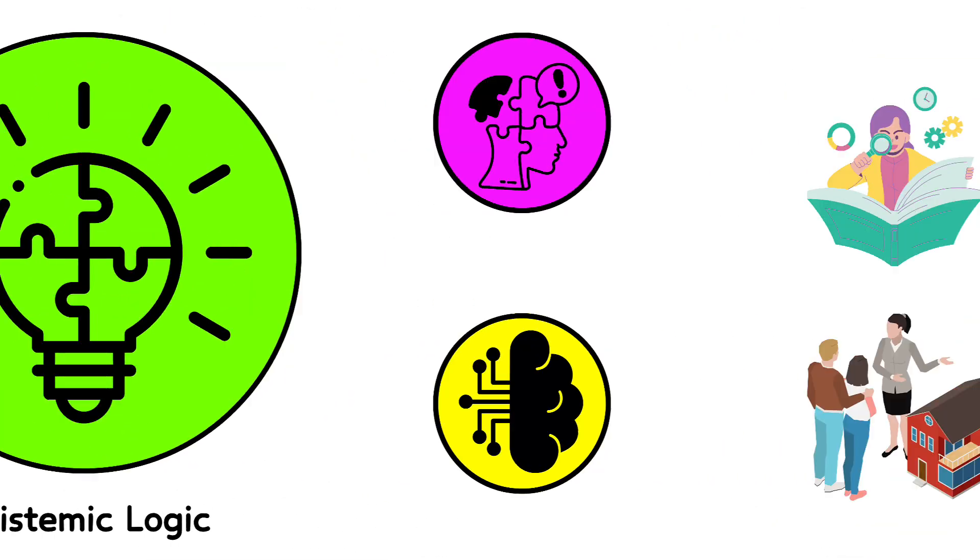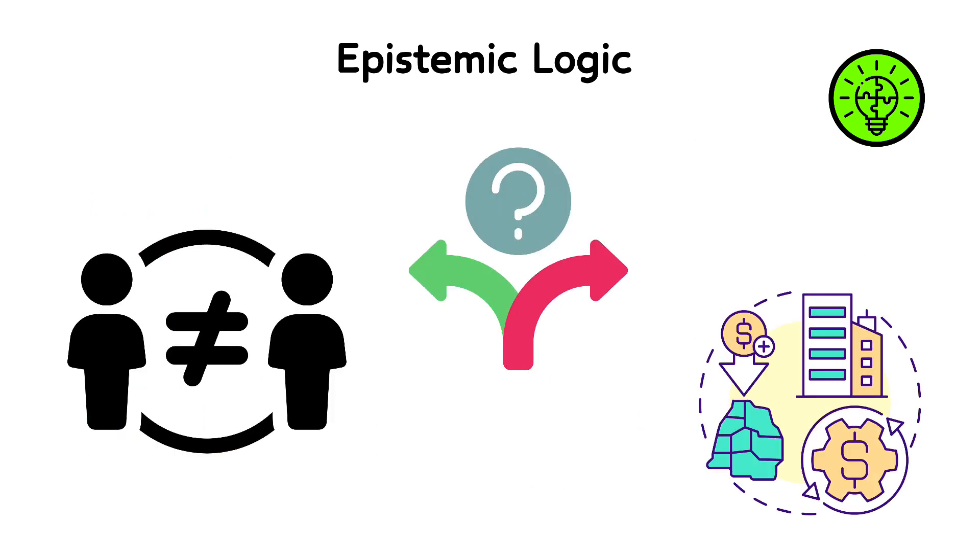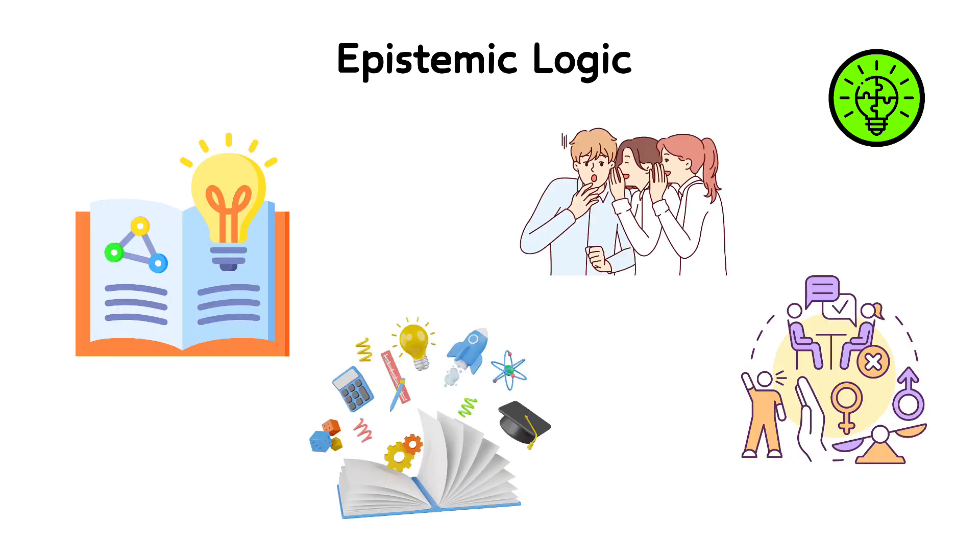Epistemic logic explores the concepts of knowledge and belief among individuals or agents. It helps to analyze statements like Alice knows that Bob went to the store, or it is believed that the meeting will start at noon. This type of logic is crucial for distinguishing between what is known and what is believed, a distinction that can impact decisions and actions in significant ways. Epistemic logic is particularly relevant in fields such as artificial intelligence, where understanding and modeling the knowledge states of intelligent agents are essential. It also plays a role in philosophy and game theory, helping to address questions about knowledge, misinformation, and strategies based on beliefs.